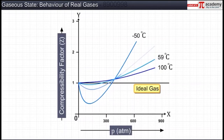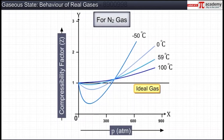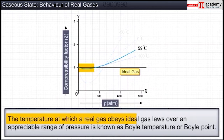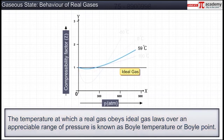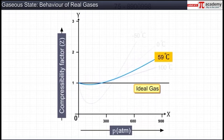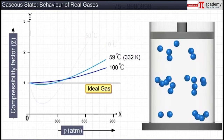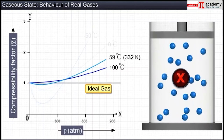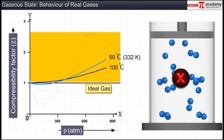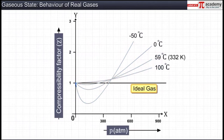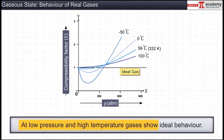The graph shown here depicts the effect of temperature on the deviations shown by nitrogen gas. The temperature at which a real gas obeys ideal gas laws over an appreciable range of pressure is known as the Boyle temperature or Boyle point. The Boyle point depends upon the nature of the gas. The Boyle temperature of nitrogen is 332 Kelvin. Above the Boyle temperature, real gases are difficult to compress and the Z value is greater than 1. Below the Boyle temperature, real gases first show a decrease in Z, then reach a minimum, and with increasing pressure the Z value increases continuously. Thus, at low pressure and high temperature, gases show ideal behavior.